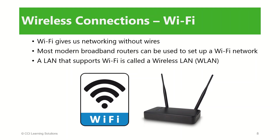Now we move on to wireless connections. Wireless networking is a form of networking where systems use their Wi-Fi capability to send and receive radio transmissions over the air. Most modern broadband routers include wireless capability, which means they can be used to create wireless networks. These are infrastructure mode networks — all wireless devices that join the network communicate with the router, not directly with one another.